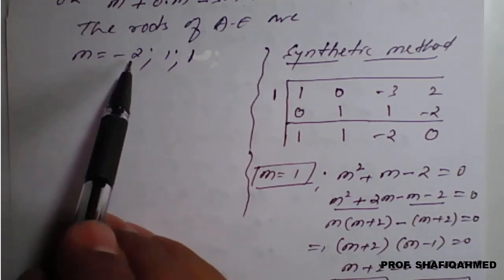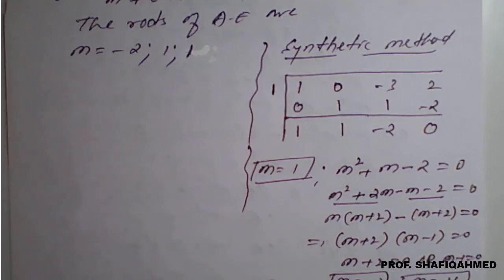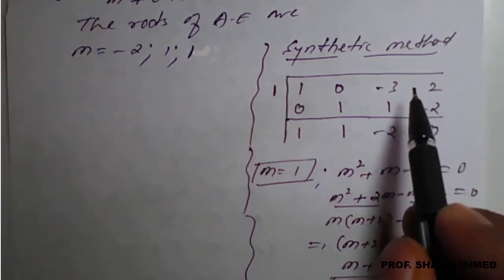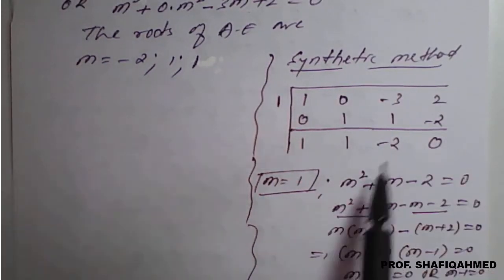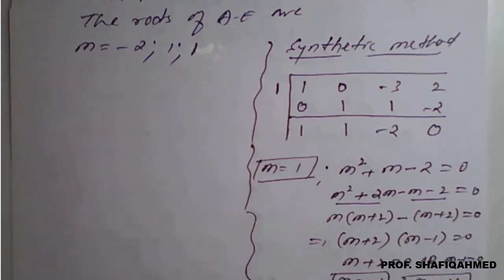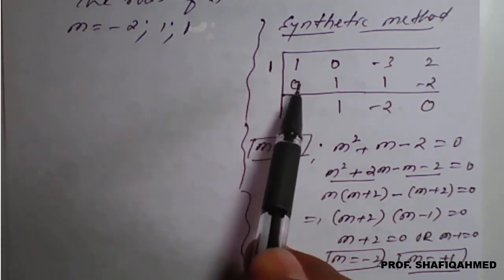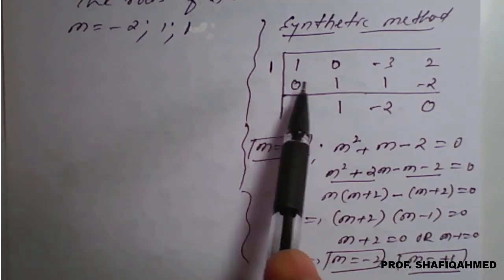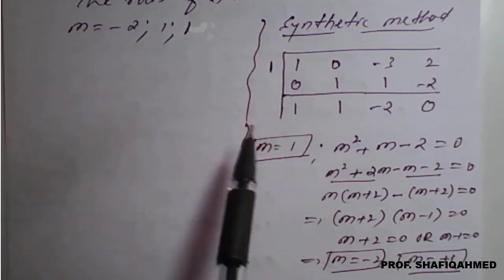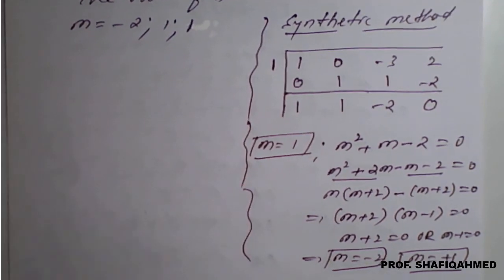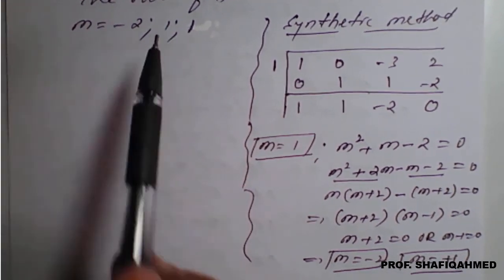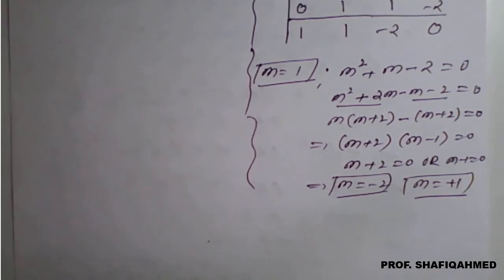The roots are 1, 1, and -2, which matches exactly what we got from the calculator. The synthetic method can also be used when the degree is m⁴ or higher. You can use either this manual method or the calculator for simplification.